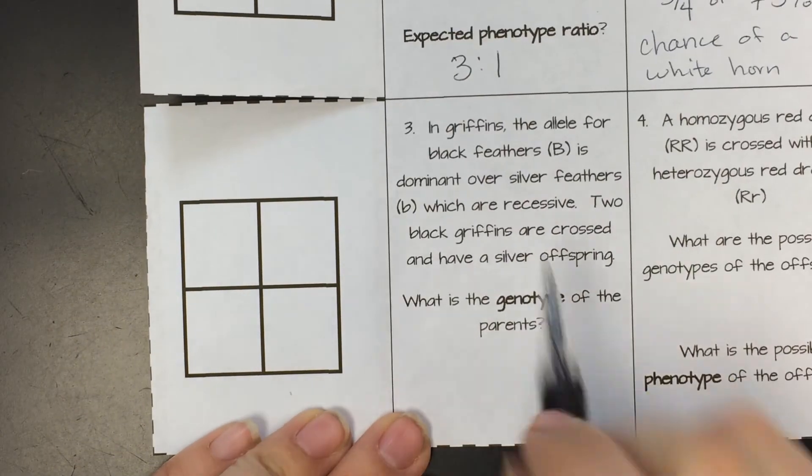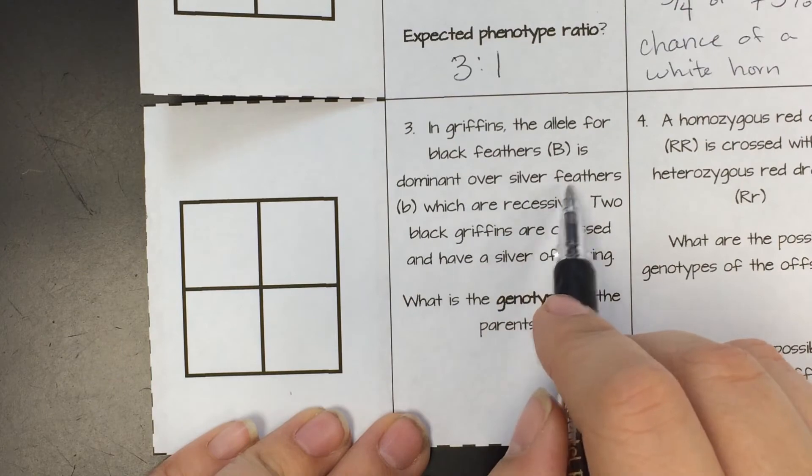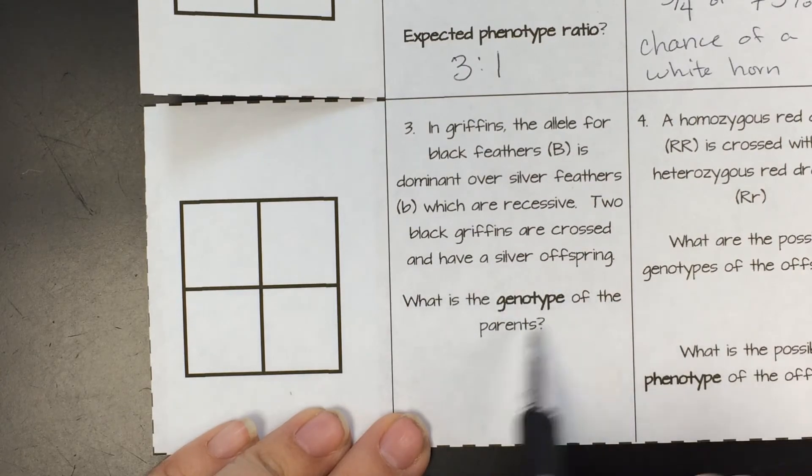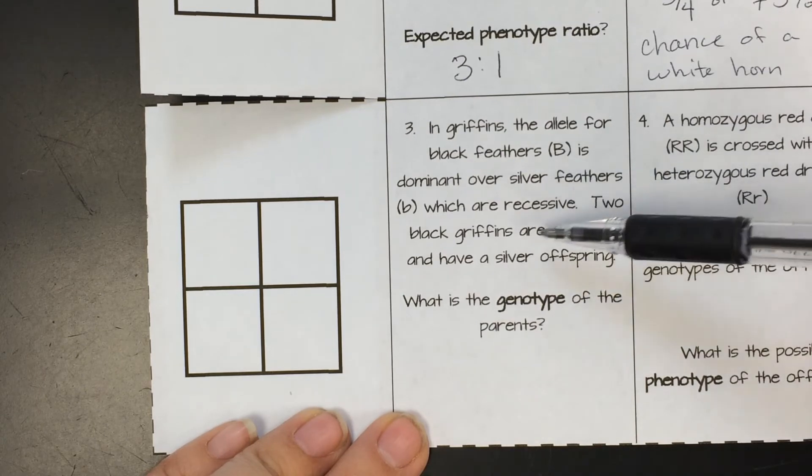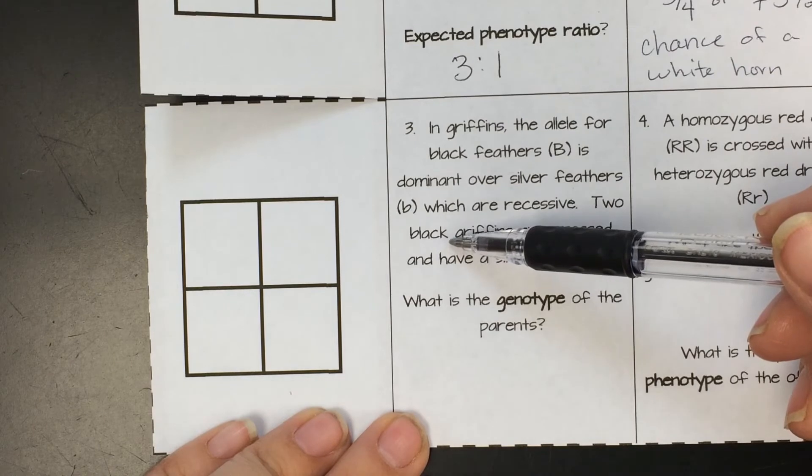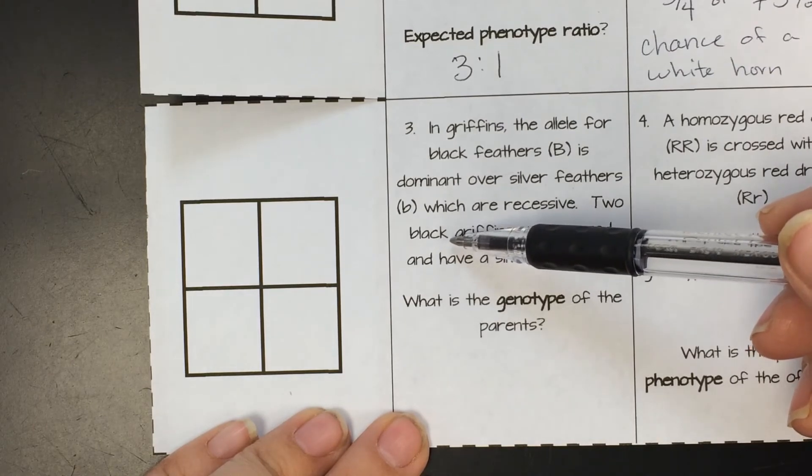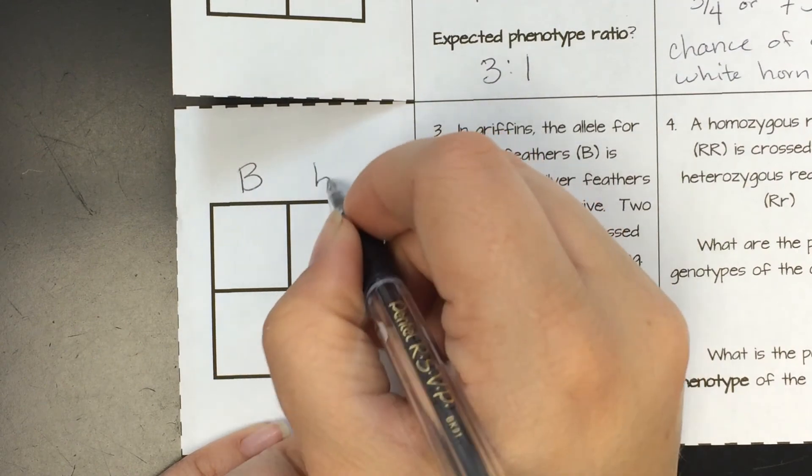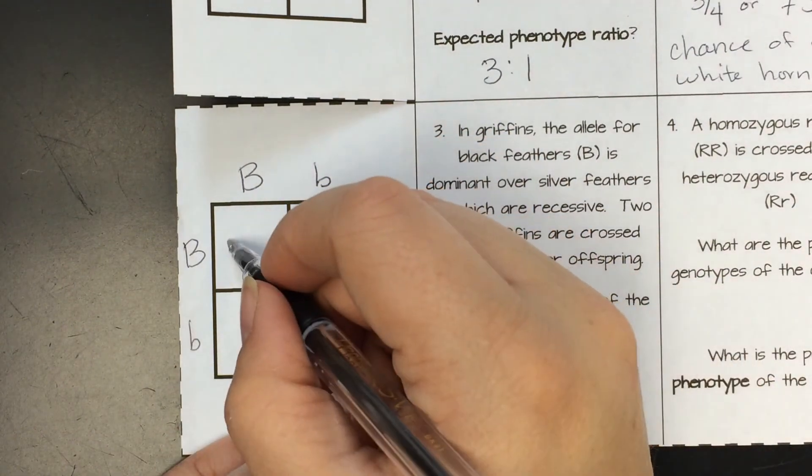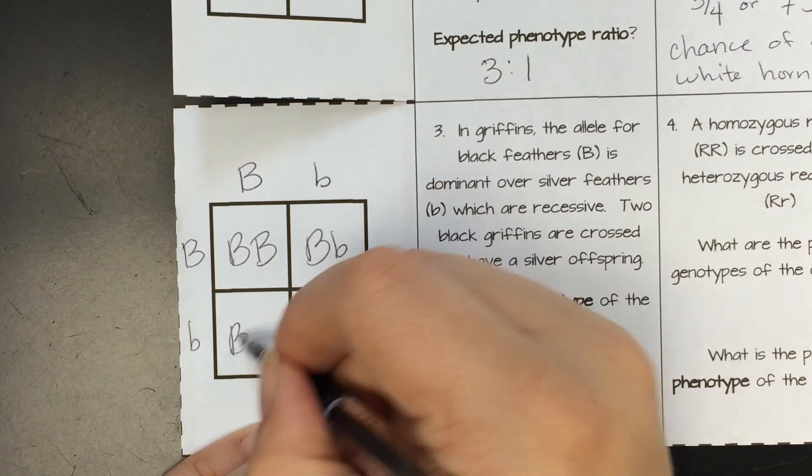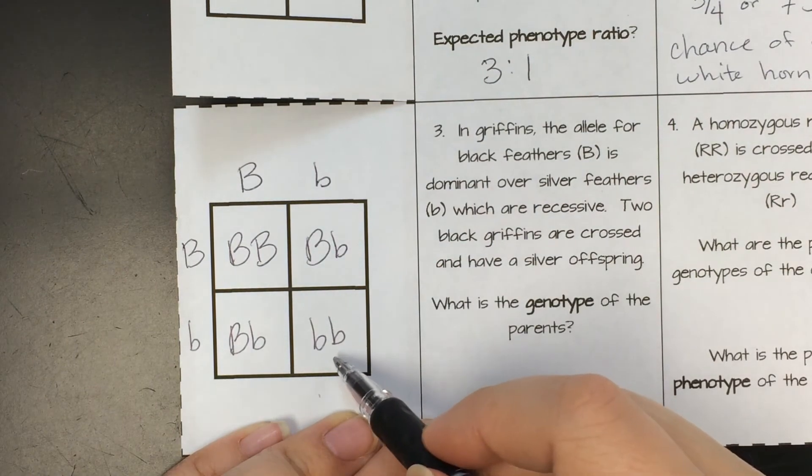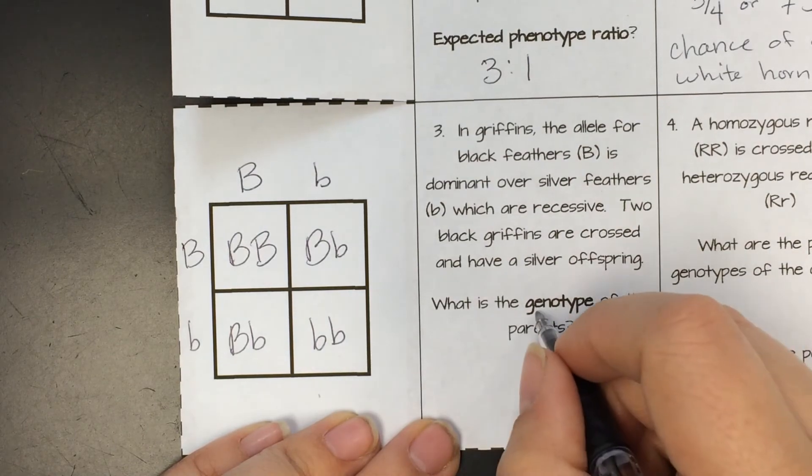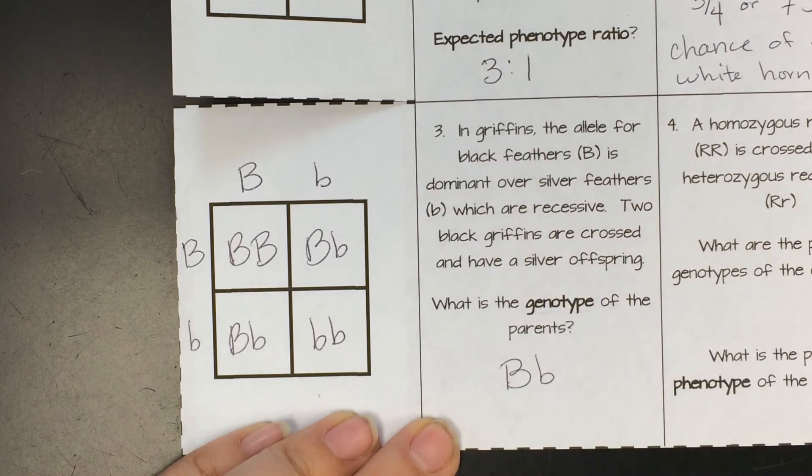On question number three, in griffins, the allele for black feathers, big B, is dominant over silver feathers, little b, which are recessive. Two black griffins are crossed and have a silver offspring. What is the genotype of the parents? Well, if silver is recessive and both parents were black, which is dominant, that means they had to have the recessive gene somewhere. And so the only way that's possible is if the parents are heterozygous. And to show you that, let's take a look. So if we have big B, little b, crossed with big B, little b, you would end up with a Punnett square that looked like this. And there would be the silver offspring. And so they would have a one out of four chance, or a 25% chance, but the genotype of the parents would have to be heterozygous to give us a recessive offspring.